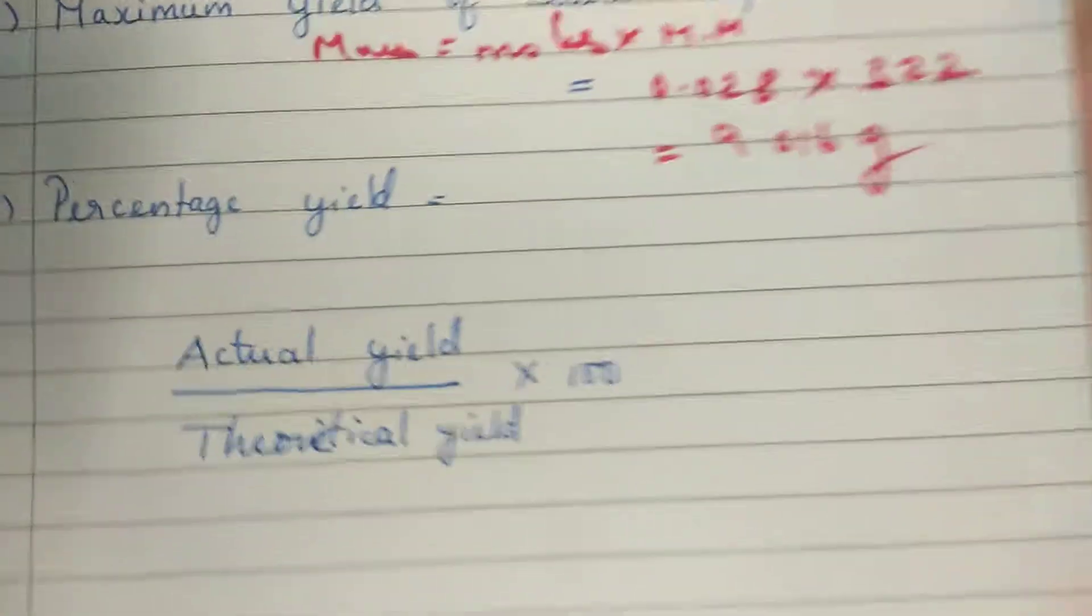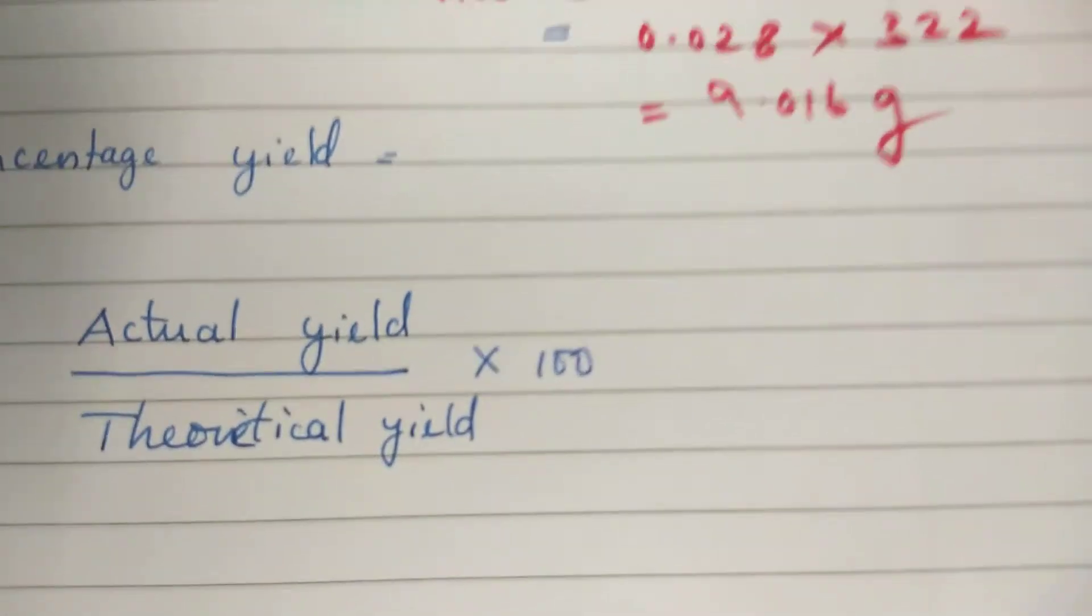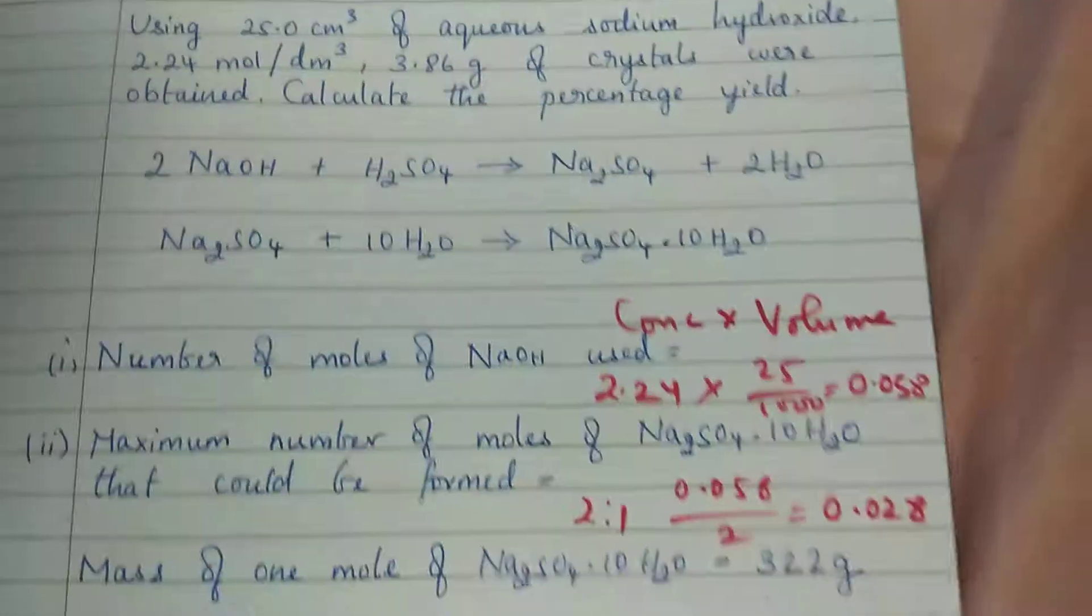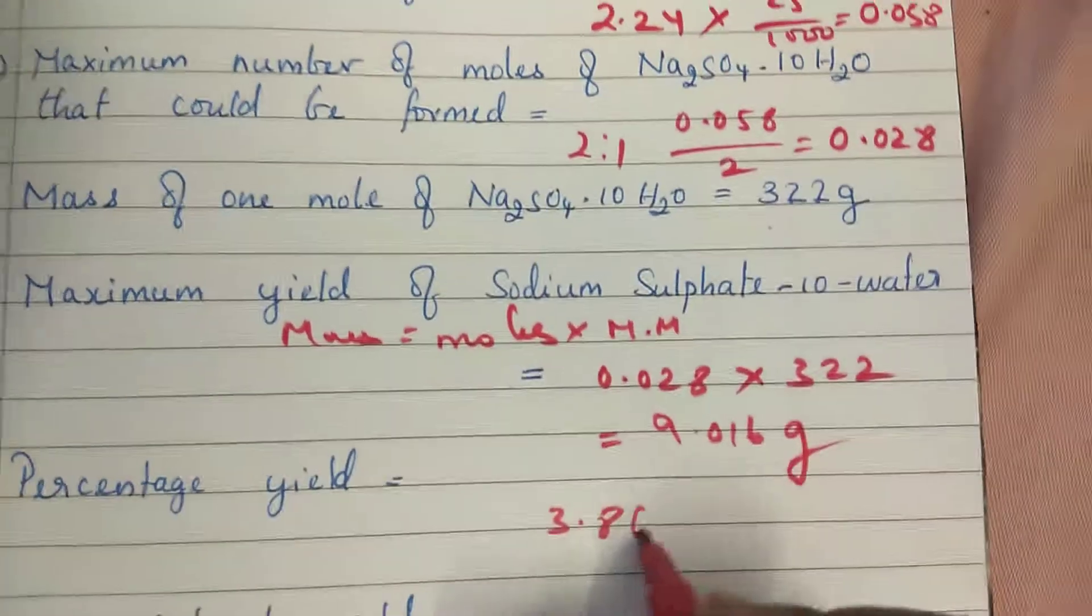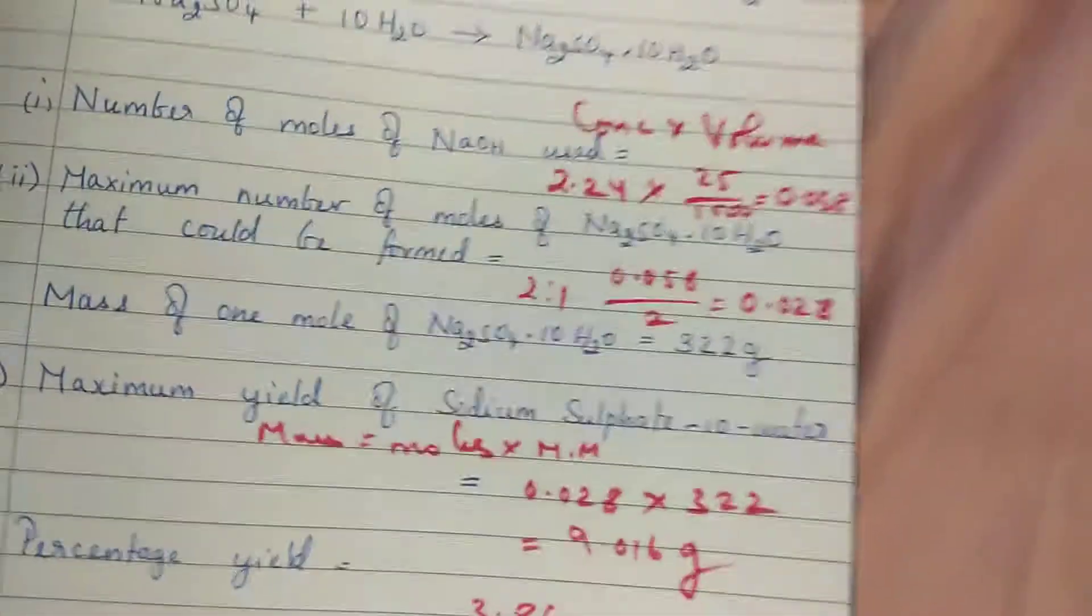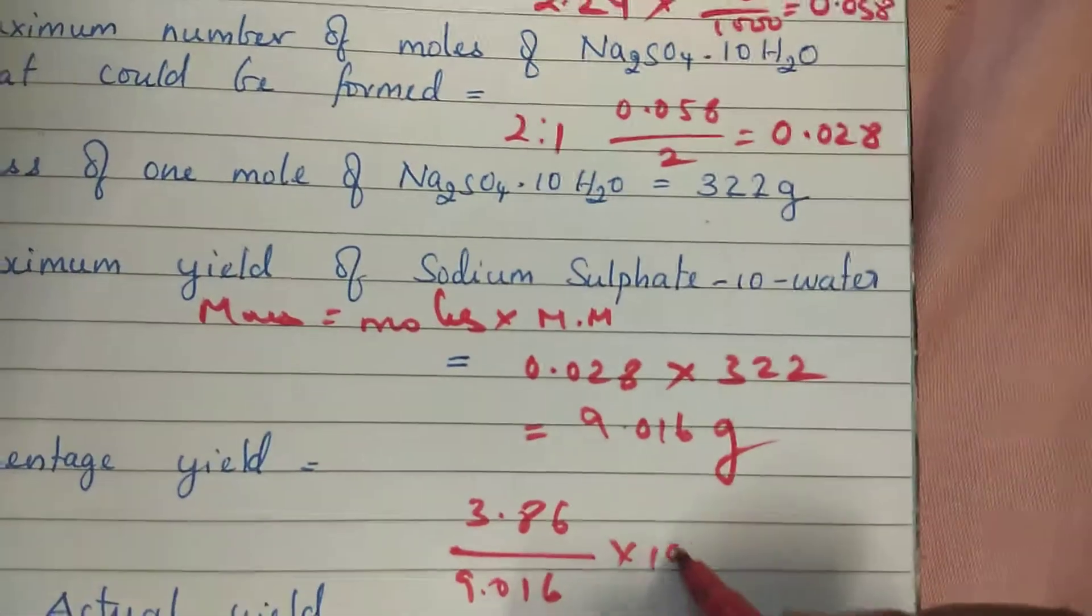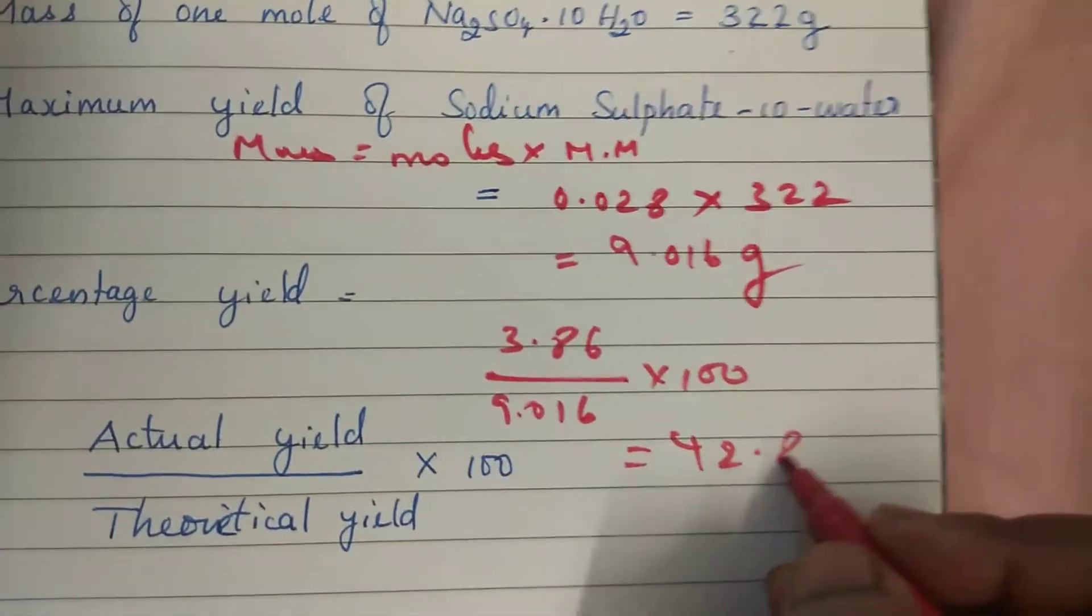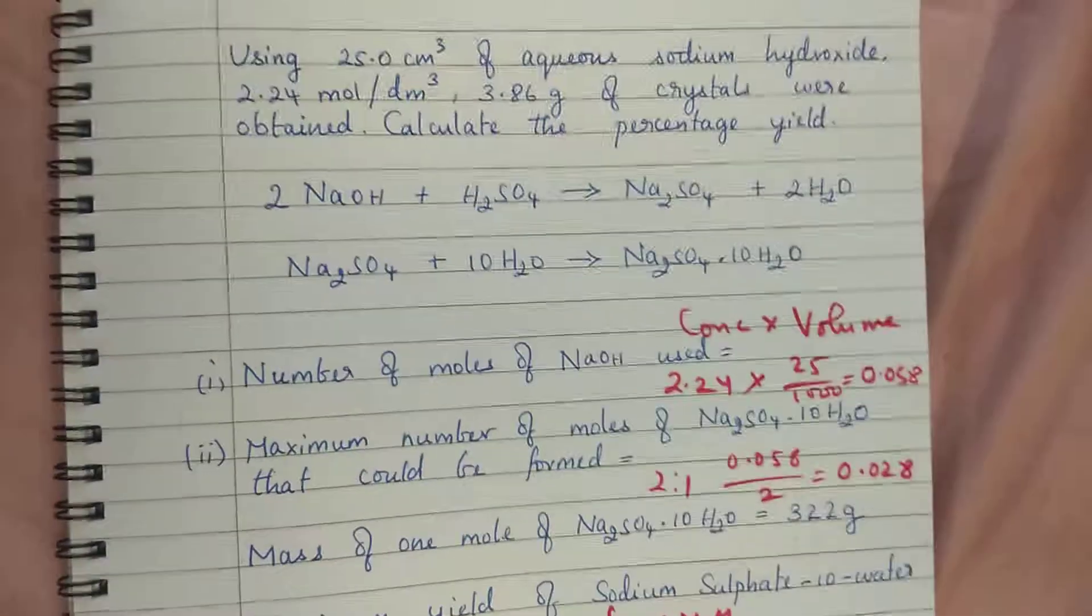Percentage yield. We have learned this formula: actual yield by theoretical yield into 100. Actual yield is they have given here, 3.86 gram of crystals were obtained. That means 3.86 gram by what is the theoretical yield? 9.016. 3.86 into 100. This gives you 42.8%.